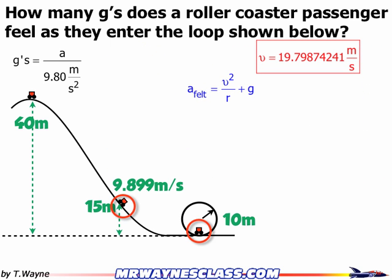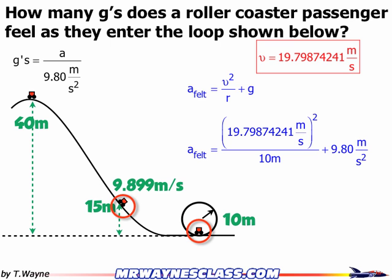Next step is to use the velocity in my acceleration felt formula. So all I'll do is plug it in. The acceleration felt is equal to (19.79 meters per second)², and of course I keep all the decimals, divided by 10 meters, that's the radius of the loop, plus the value for g, 9.8 meters per second squared. And that gives me the acceleration felt of 48.9990201 meters per second squared.